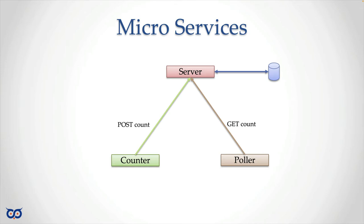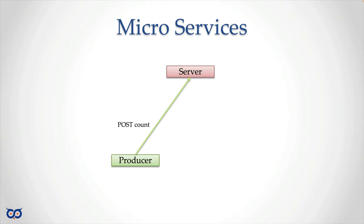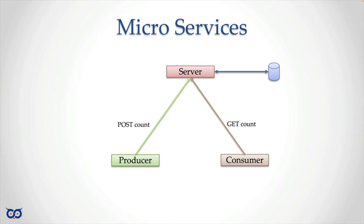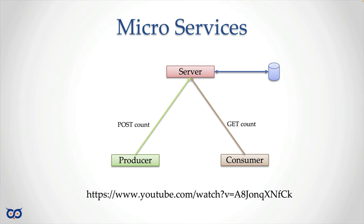Instead of calling it a counter I could call it a producer, with the server persisting data to a database and a consumer getting data from the server. But it doesn't change the previous diagram — I'm going to stick with counter and puller.